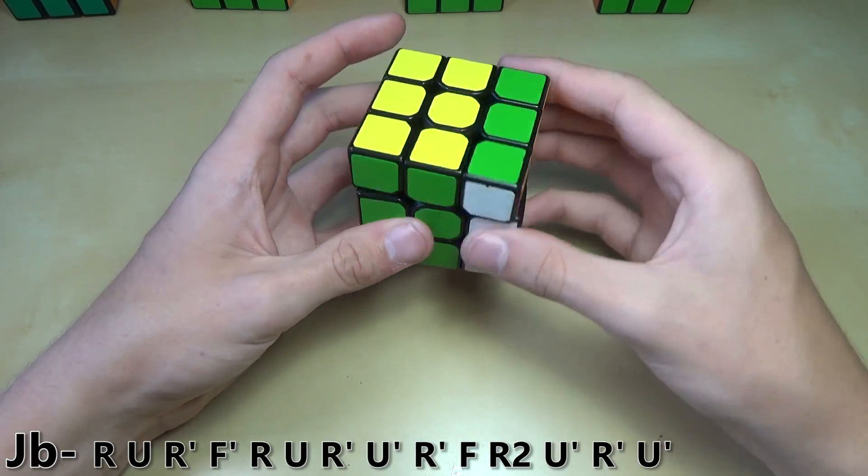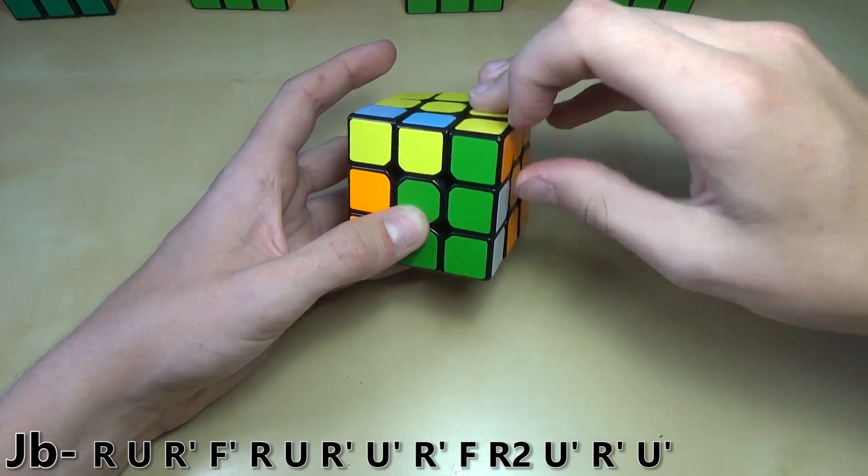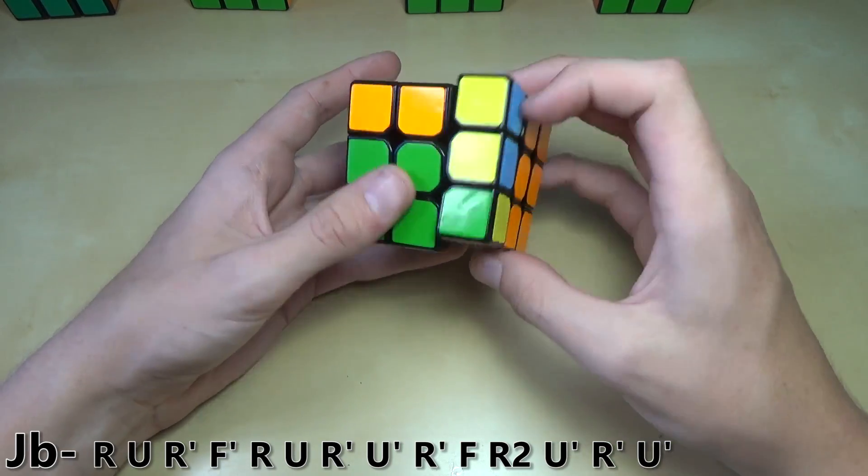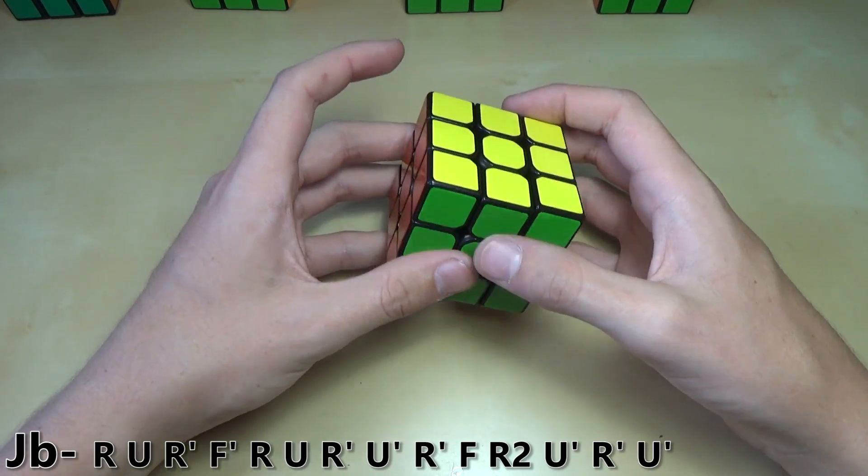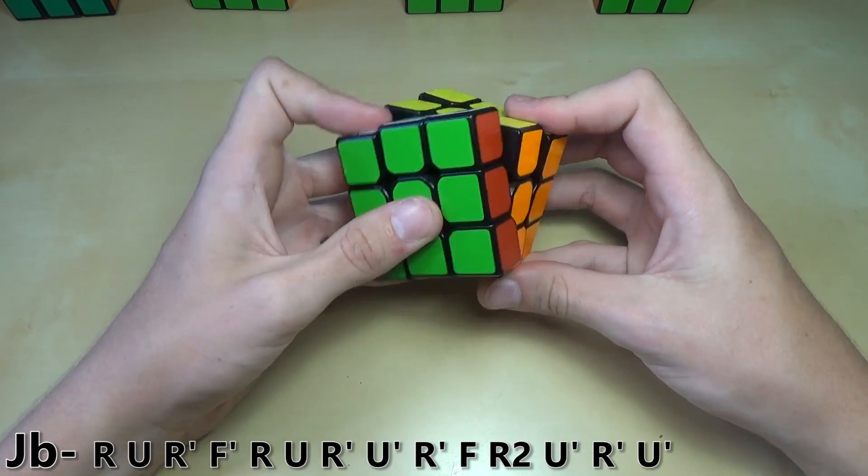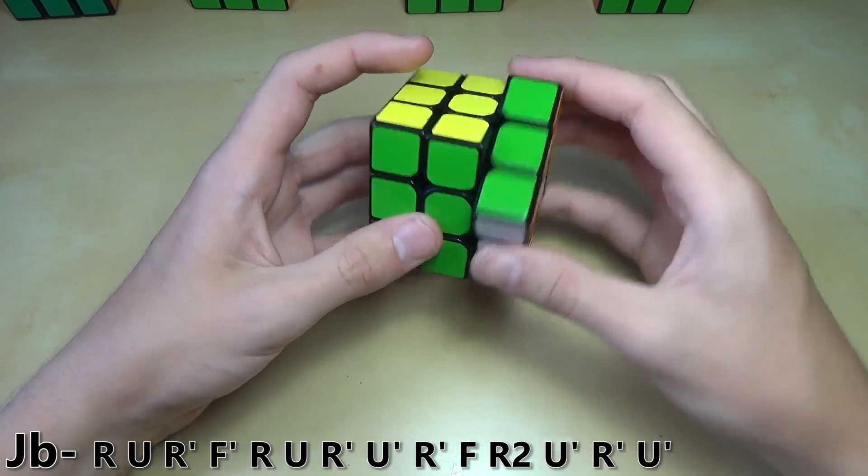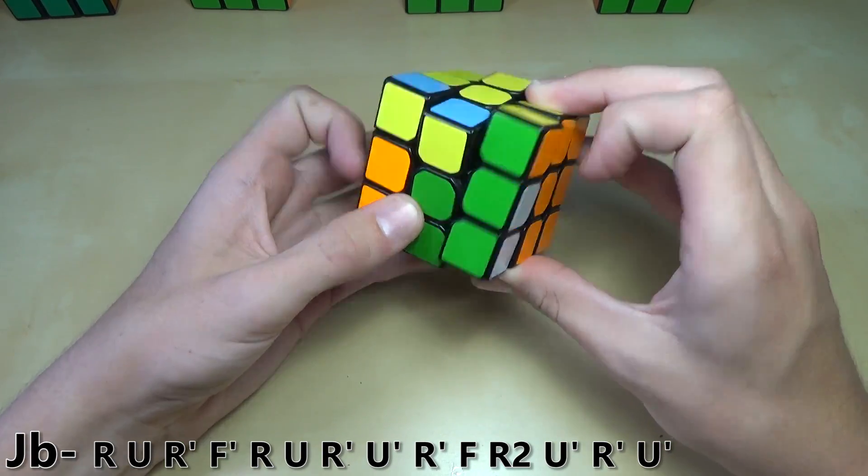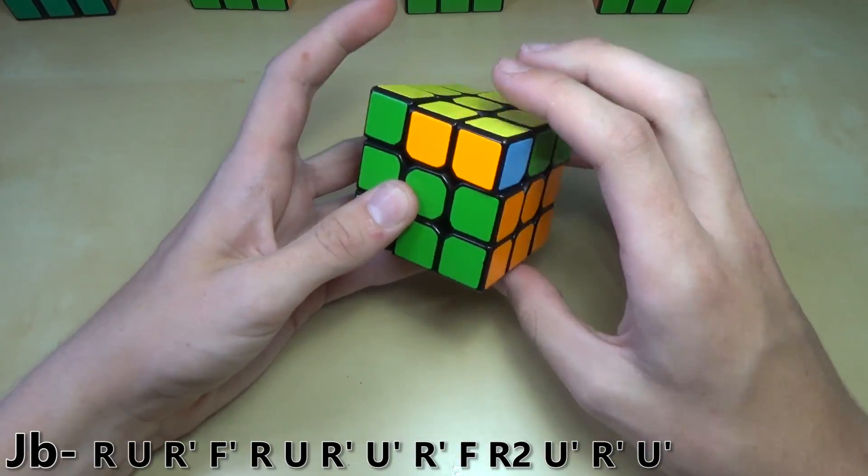The way that I used to do it was like this. R-U-R-prime F-prime with my thumb. And then you had to kind of re-grip again. There's actually a much better way to do it. Like I said with the T-perm, with the F-move at the very end, I do it like that. But I also do that with the F-prime move in the beginning of this algorithm. So R-U-R-prime F-prime. And then you can just continue on doing it really fast from there.